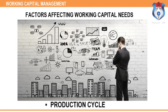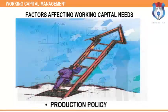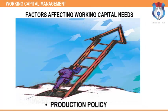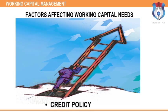Production cycle: refers to the time involved in the manufacture of goods, covering the time span between procurement of raw materials and completion of the manufacturing process. Production policy: the firm's production policy determines the amount of working capital required. Credit policy: the level of working capital is also determined by the credit policy, as it determines the amount of receivables.